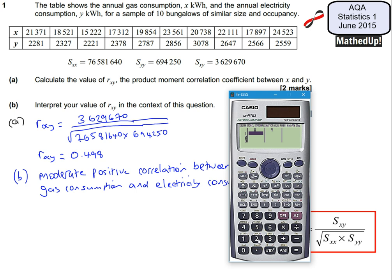So we've got 21371, 18521, 15222. I'll do all my x's first and continue to put these in for my x and my y. You might want to pause the video and do this yourself on your own calculator. I'm going to stop the video now and just accelerate ahead.